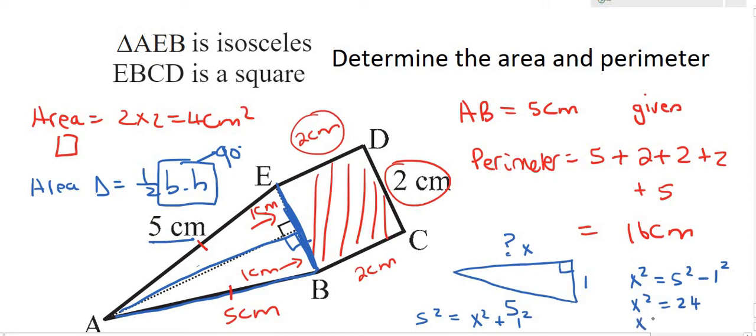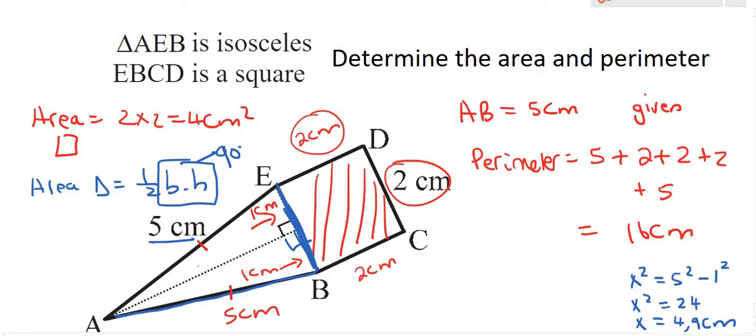And so if you had to work out x by taking the square root you're going to get 4.9 centimeters. And so now what we've just worked out is the height of this triangle. So we've just worked out this part here. And so that's going to be 4.9.